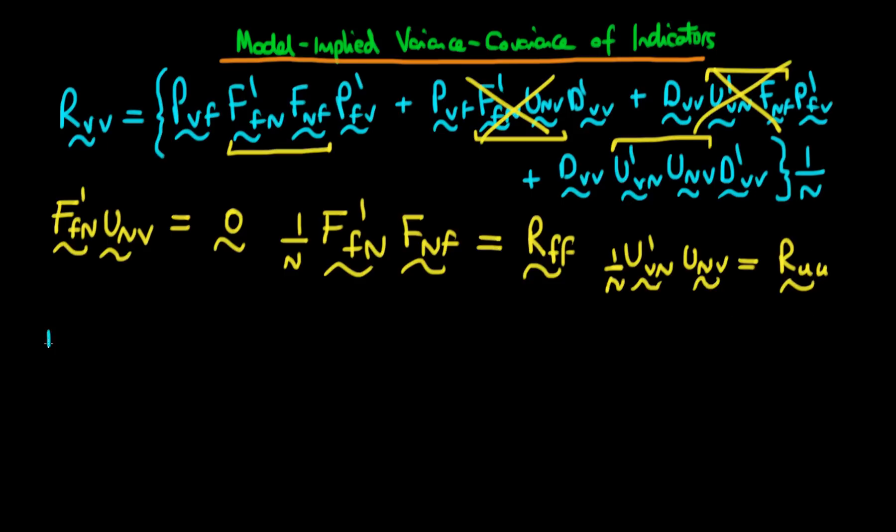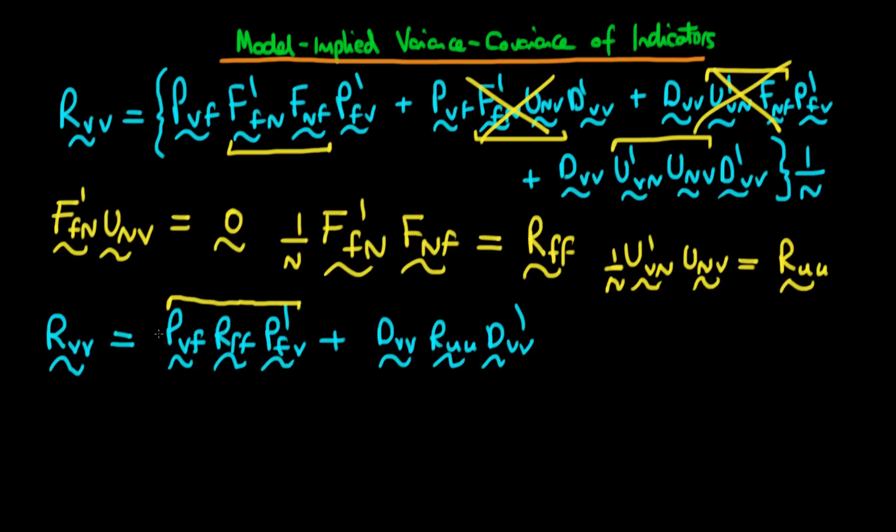So what we can do now is we can rewrite our expression for the variance covariance matrix of our indicator variables as being equal to P V F times R F F times P primed F V, plus finally, we're going to have an expression which has D V V times R U U times D V V primed. And immediately we see that this has a common form to that which we derived in the case when we were representing our model by stacked equations. So we had our equations in vector form. This first component here is just the component of the variance, which is due to the common factors.